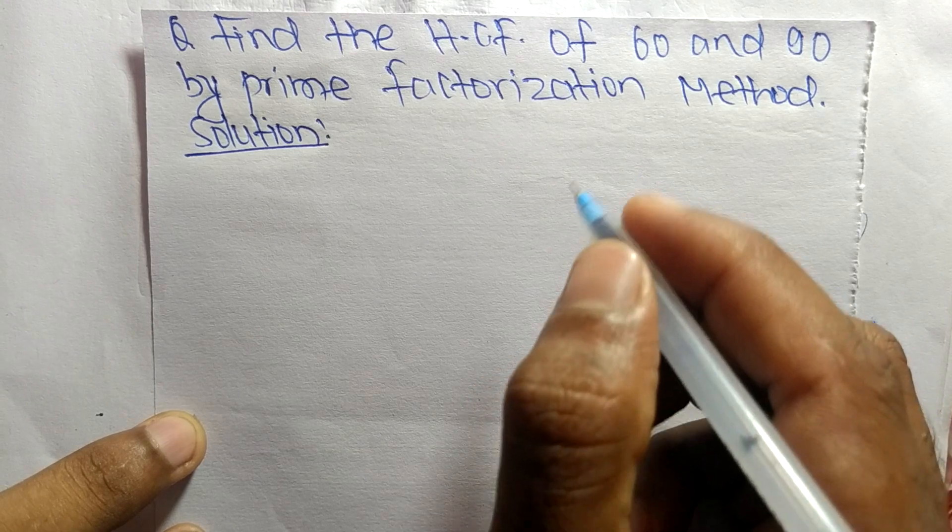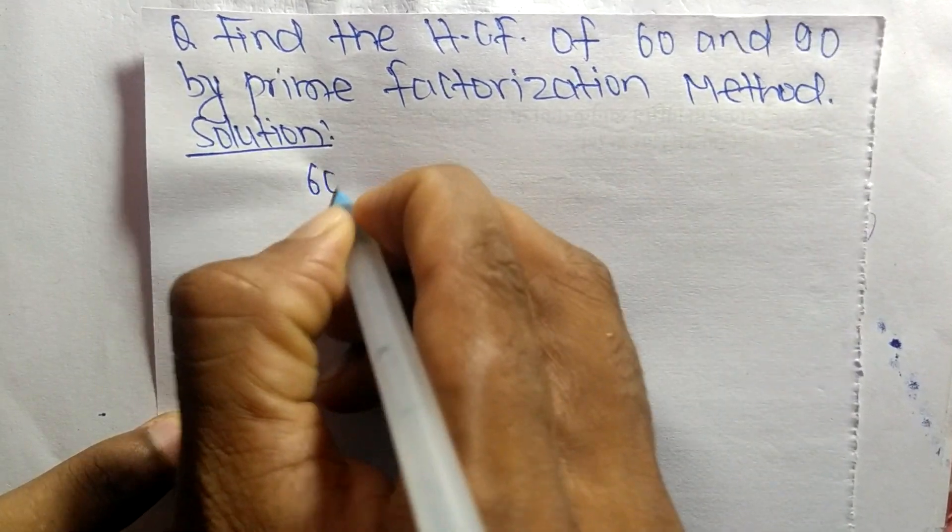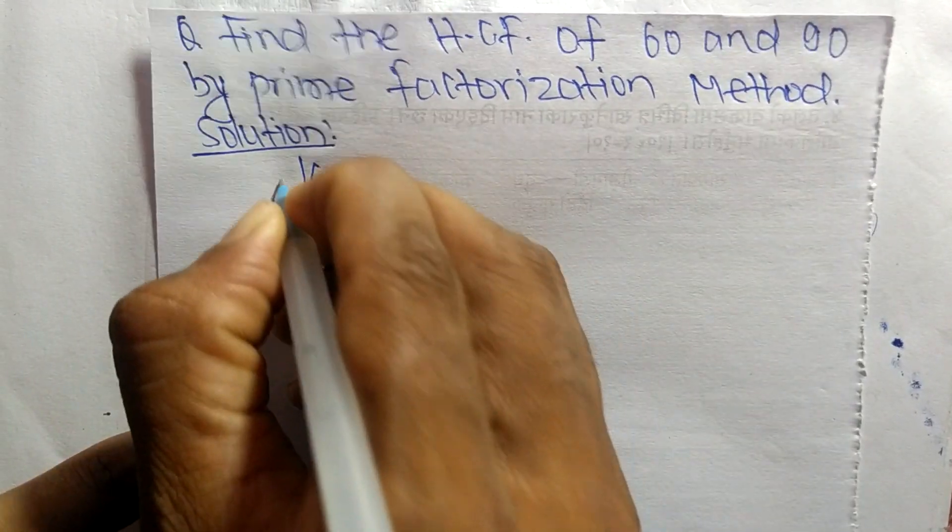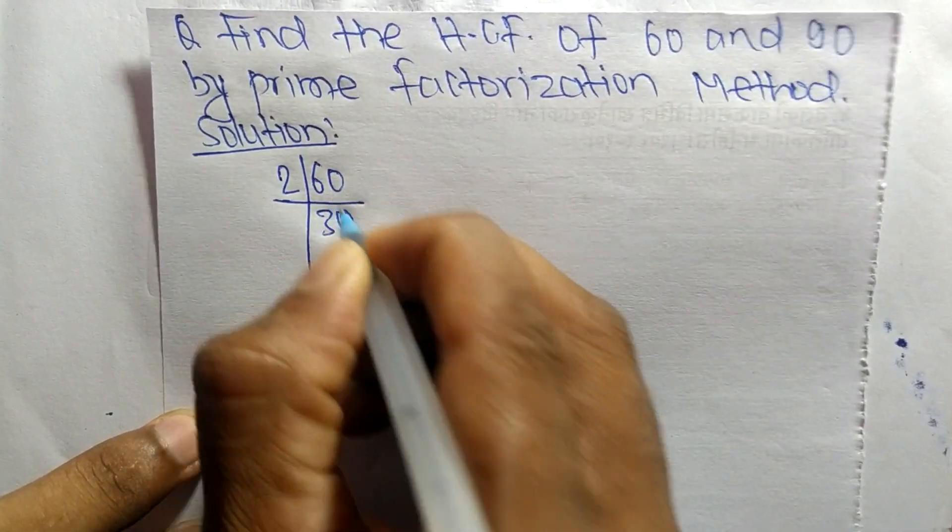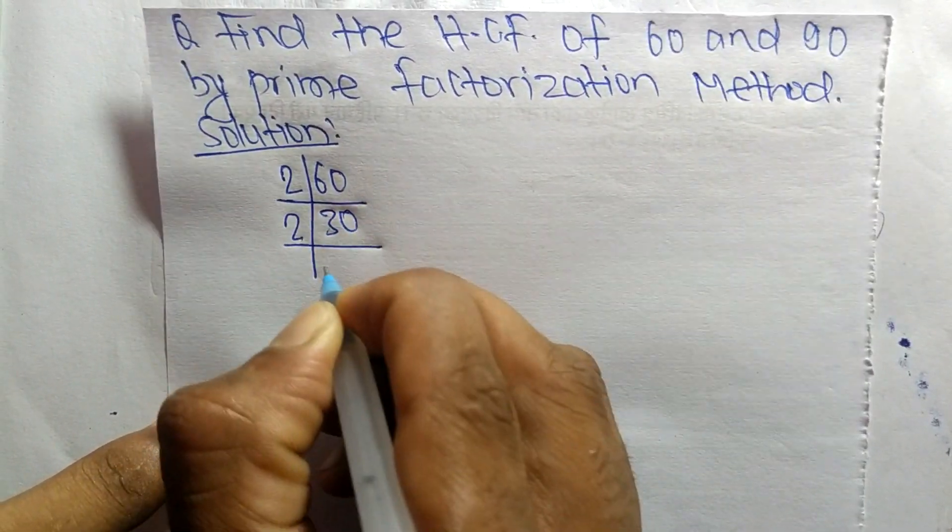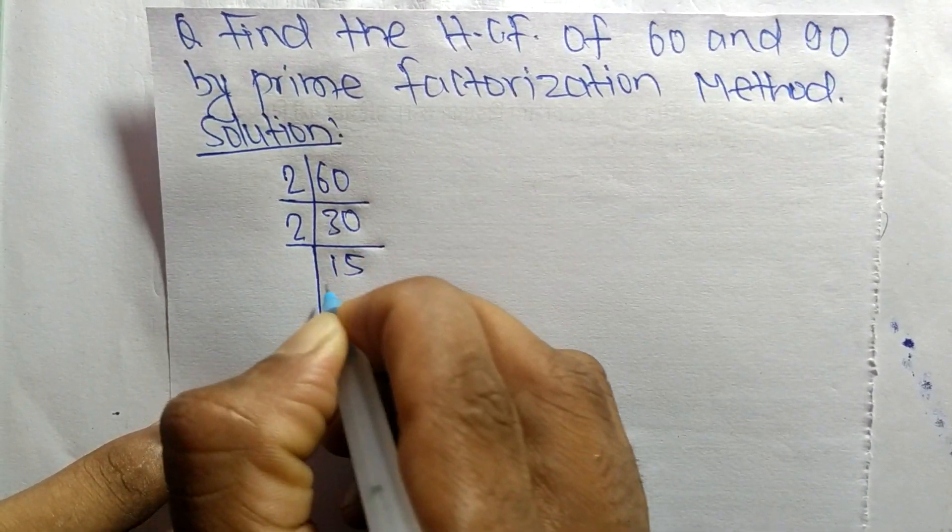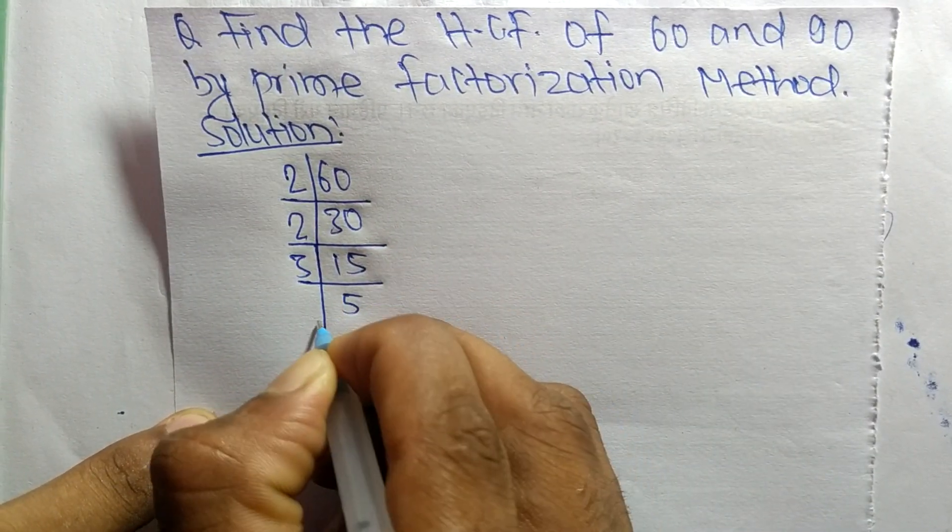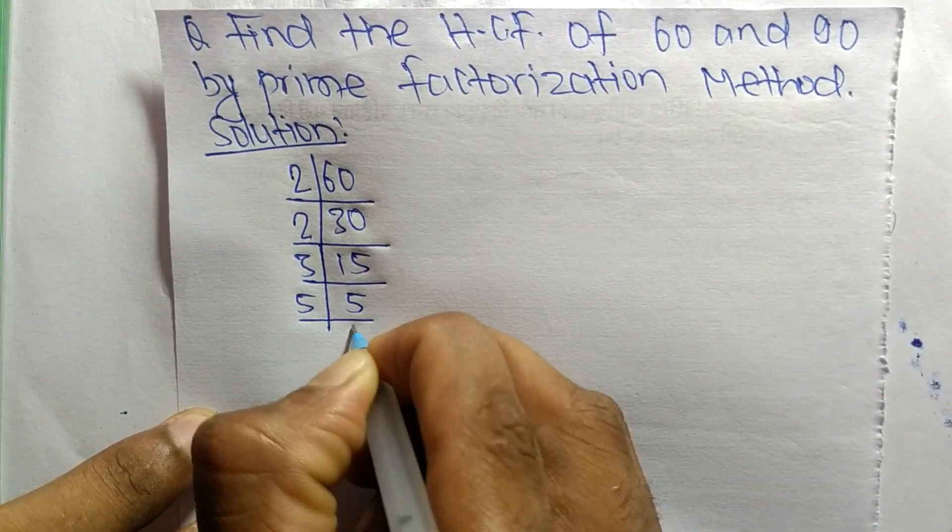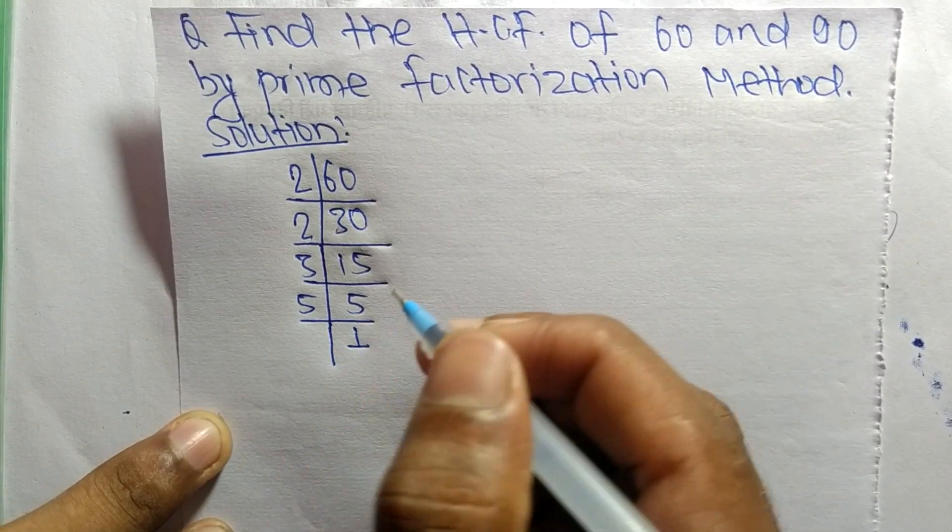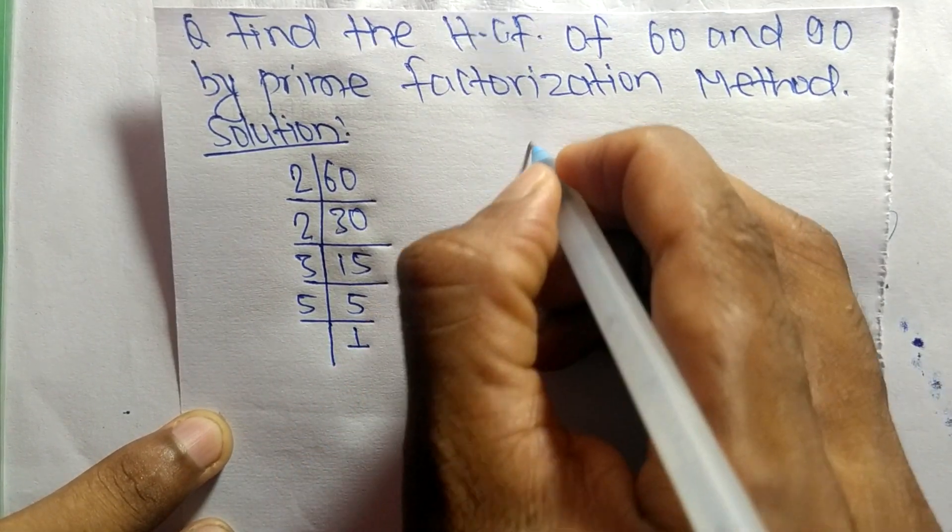First of all we find out the prime factors of 60. It is 2 times 30 equals 60, 2 times 15 equals 30, 3 times 5 equals 15, and 5 times 1 equals 5.